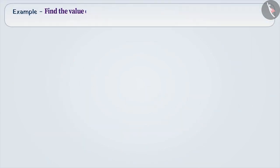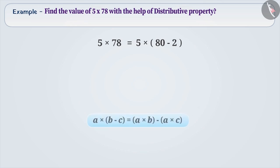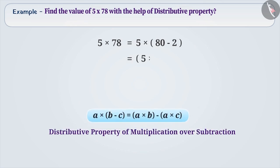Next example. Find the value of 5 into 78 using the distributive property. We can write 5 into 78 as 5 into (80 minus 2). This can be written as 5 into 80 minus 5 into 2 by the distributive property of multiplication over subtraction.